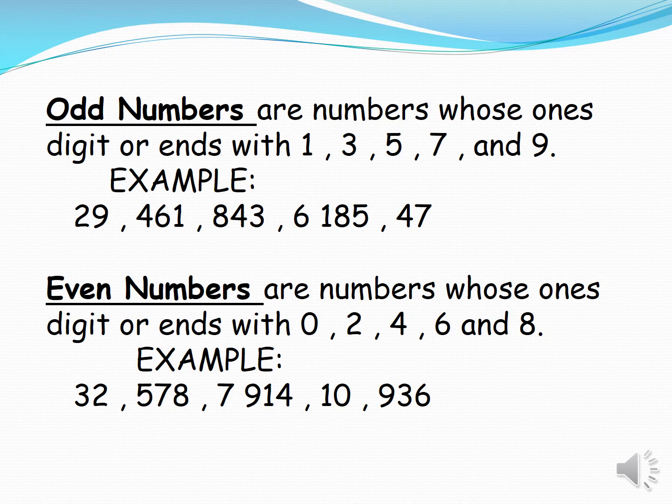Odd numbers are numbers whose ones digit ends with 1, 3, 5, 7, and 9. Example: 29, 461, 843, 6,185, 47. These numbers end with 9, 1, 3, 5, and 7.